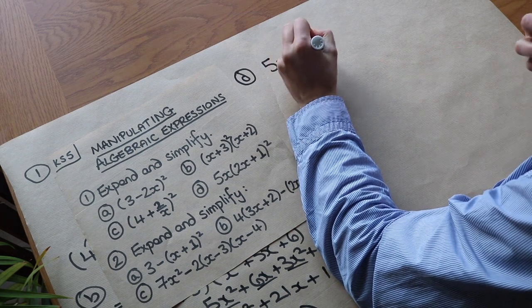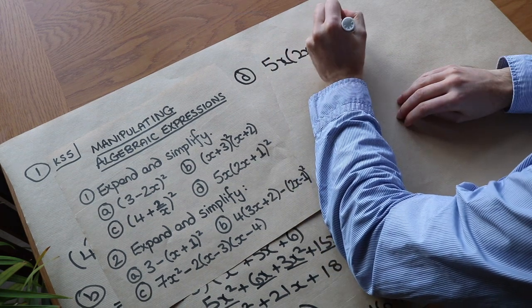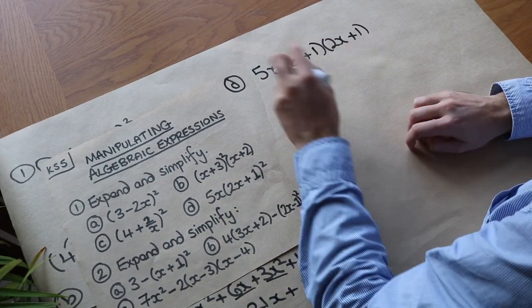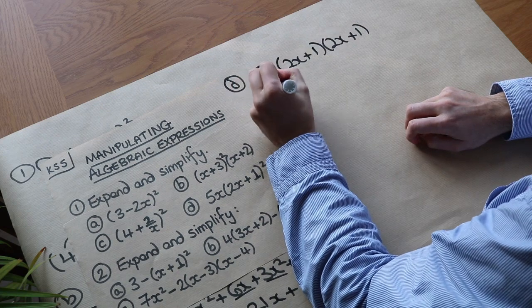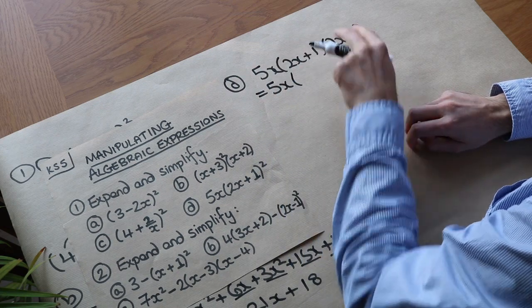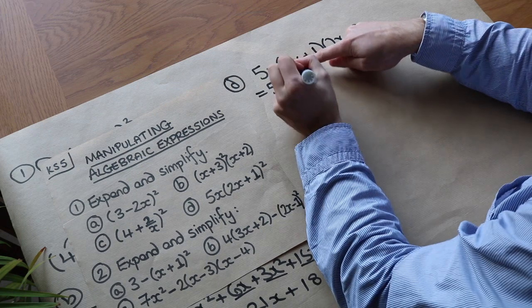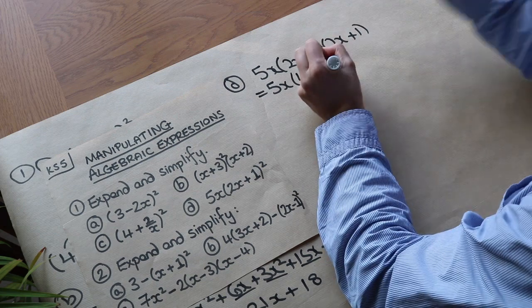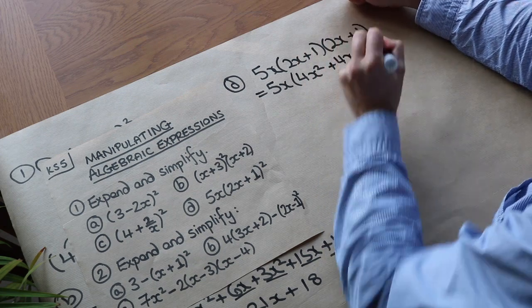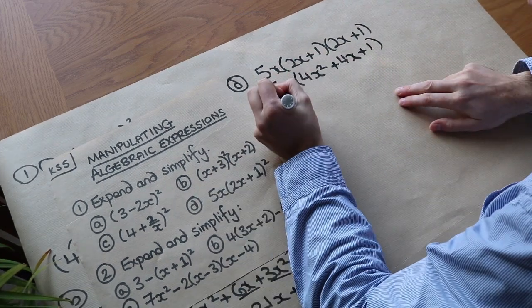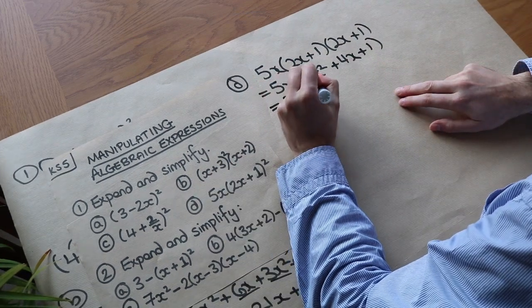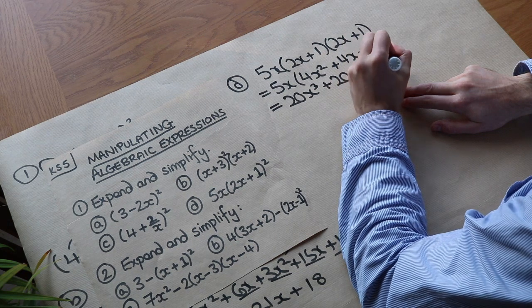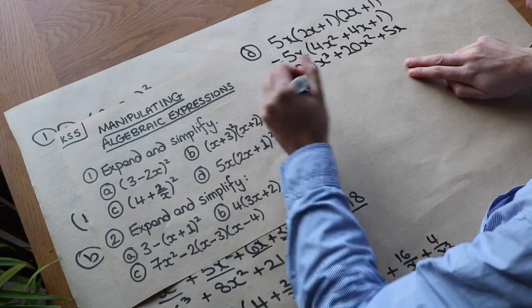For part D: 5x(2x + 1)². Write the bracket out twice: (2x + 1)(2x + 1). When something is in front of brackets, expand the brackets first then multiply. Using the quick method: (2x)² = 4x², cross term is 2x times 1 doubled = 4x, and 1² = 1. So (2x+1)² = 4x² + 4x + 1. Then multiply each term by 5x to get 20x³ + 20x² + 5x.